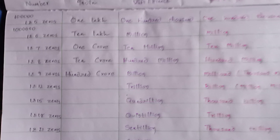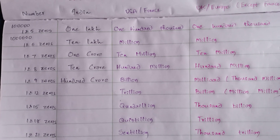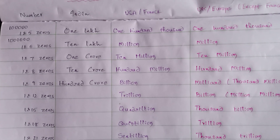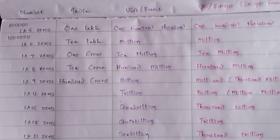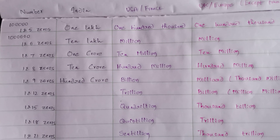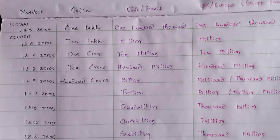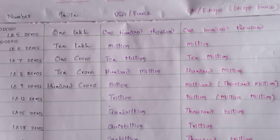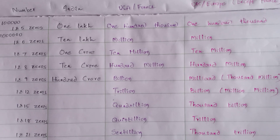1 followed by 12 zeros — in USA and France it is known as trillion. In UK and Europe, except France, it is known as billion.